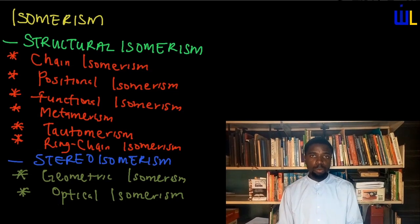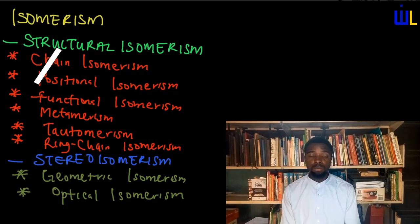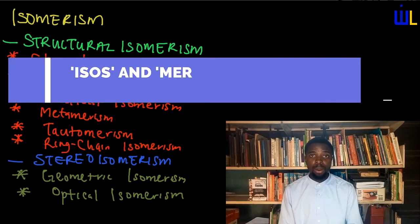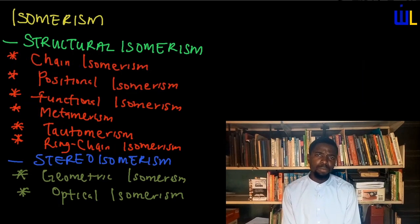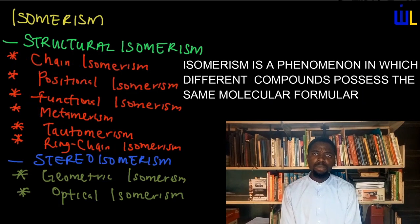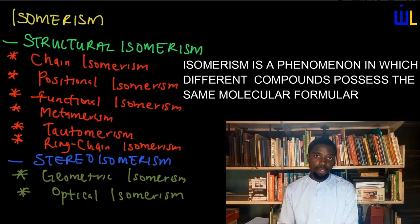What is isomerism? Isomerism is actually derived from two Greek words, isos and meros, which happen to mean equal parts. So defining isomerism: isomerism is a phenomenon in which different compounds possess the same molecular formula.